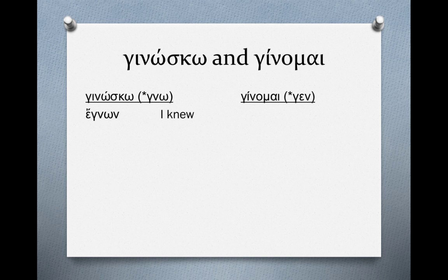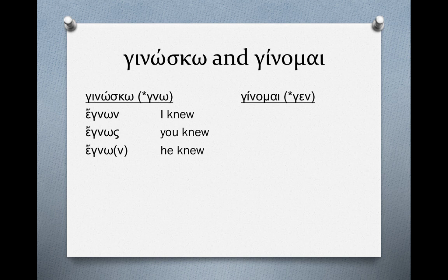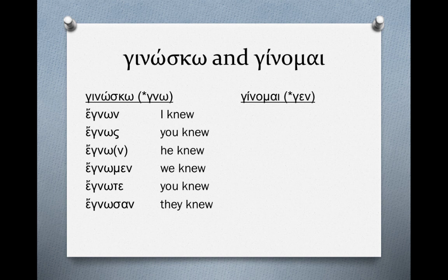The first singular would be egnon — augment plus root plus secondary ending — meaning 'I knew.' Egnos means 'you knew.' Egnon means 'he knew,' and there will be a movable nu depending on whether the next word in the sentence begins with a consonant or a vowel. Egnomen means 'we knew.' Egnote means 'you knew.' And egnosan means 'they knew.'